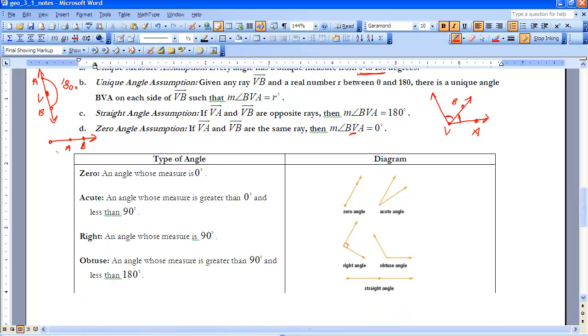Now, if you stopped the video earlier and filled in our different angles, types of angles, and filled in the vocabulary for that, we can go ahead and draw a diagram if you haven't already done so. Here, as we talked about in the zero angle assumption, a zero angle has a measure of zero degrees, and here's a picture.